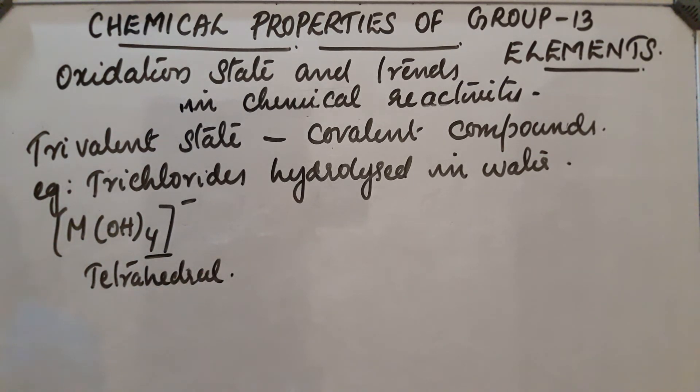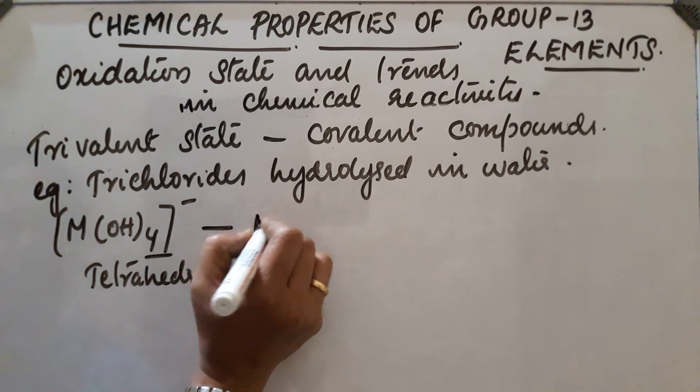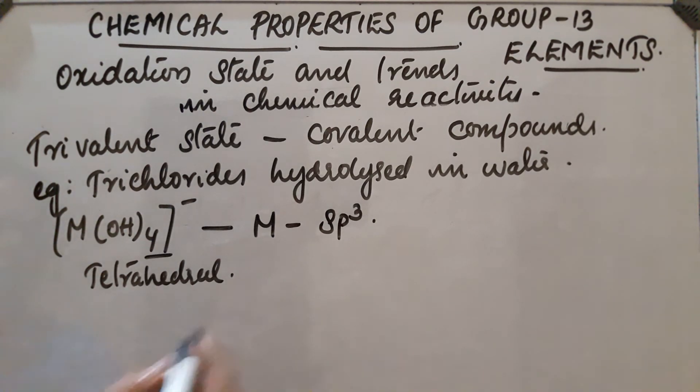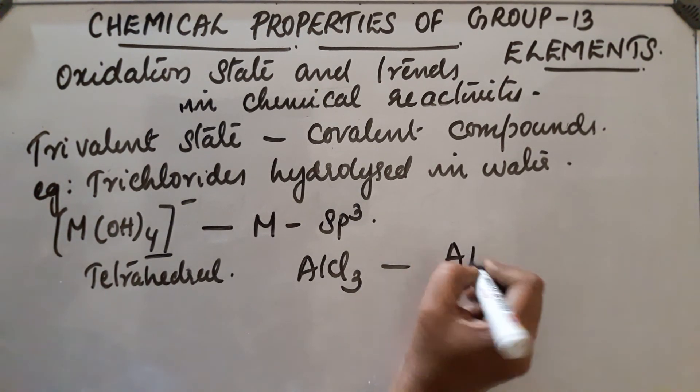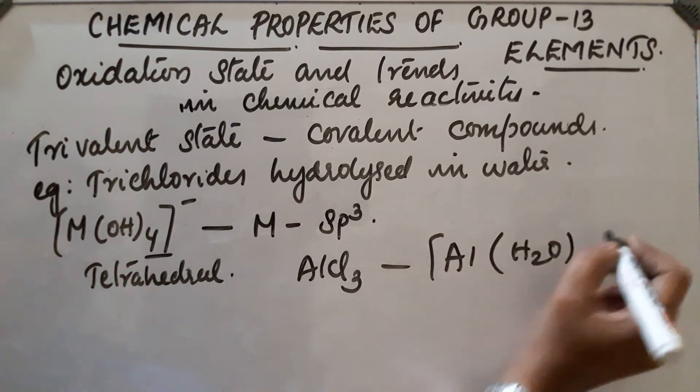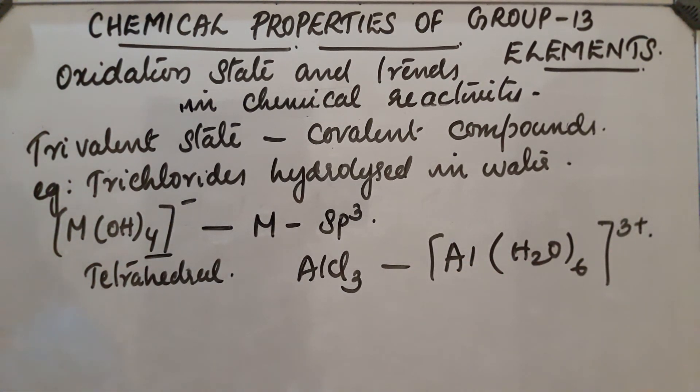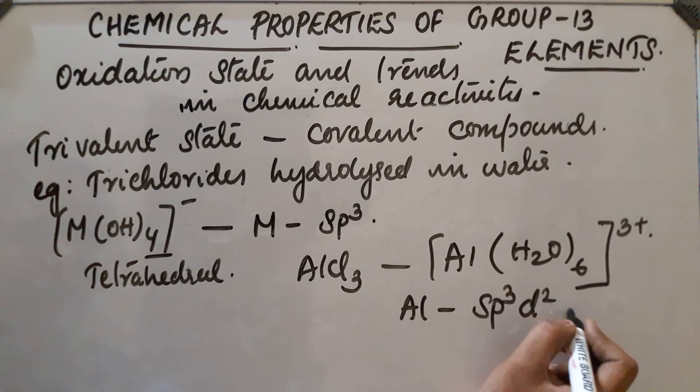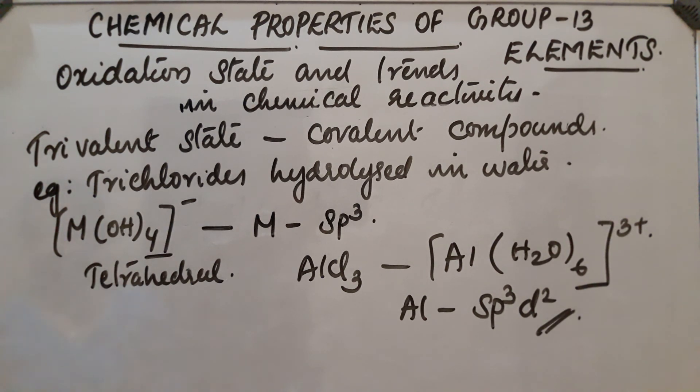In this case, the hybridization state of M is sp³. But in the case of aluminum - AlCl₃ aluminum chloride - in aqueous solution it forms an octahedral complex because it contains 3d orbitals which are used for hybridization. In this case of aluminum, the hybridization will be sp³d² hybridization. So in the trivalent state, trichlorides hydrolyze in water and form tetrahedral complexes; aluminum forms an octahedral complex.